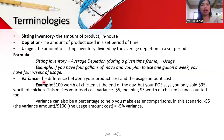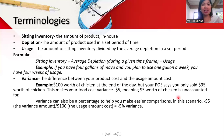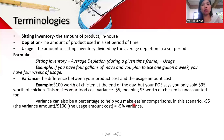Variance is the difference between your product cost from the POS and the usage amount cost from your inventory. For example, if you have 100 dollars worth of chicken from the POS and 95 dollars from the inventory usage, you have a negative 5-dollar variance, meaning 5 dollars worth of chicken is unaccounted for. You need to double-check what happened — there may be a staff error or items leaving the kitchen unrecorded.